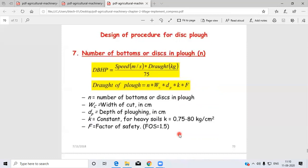Next point is the number of bottoms or discs in the disc plough. First determine the drawbar horsepower, equal to speed (m/s) × draft (kg) / 75. The draft equals n × Wc × dp × K × f, where n is the number of bottoms.